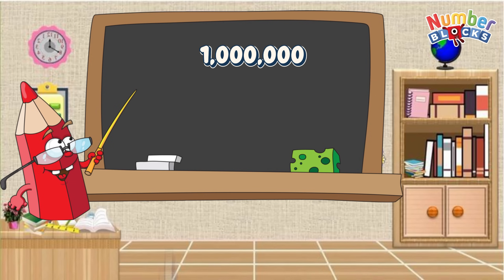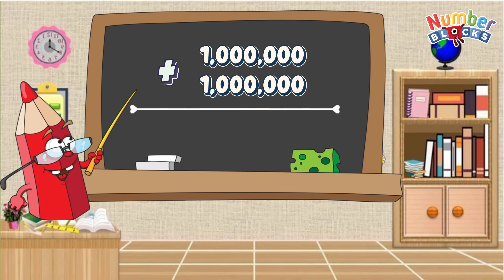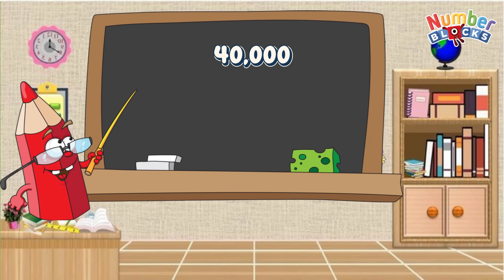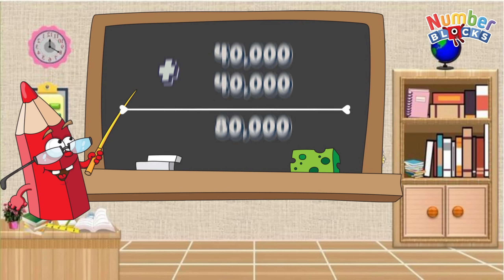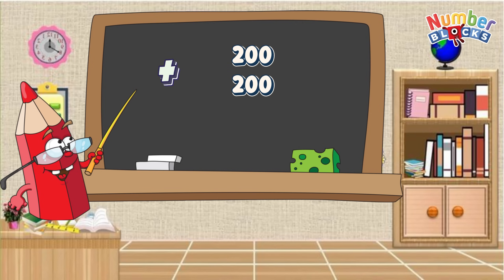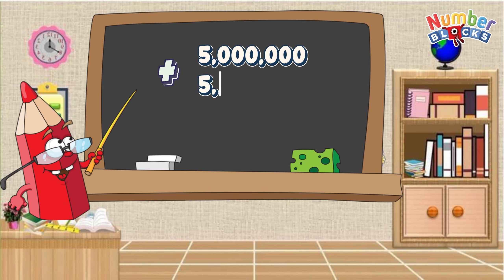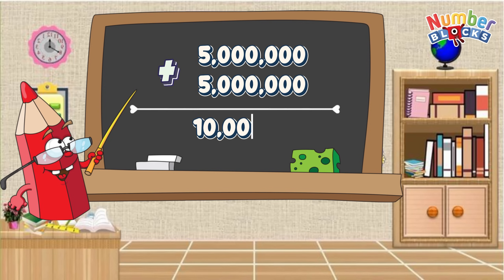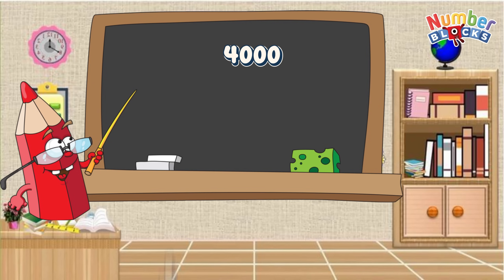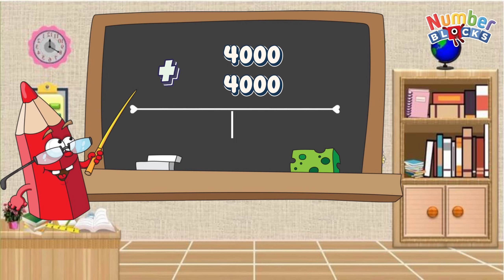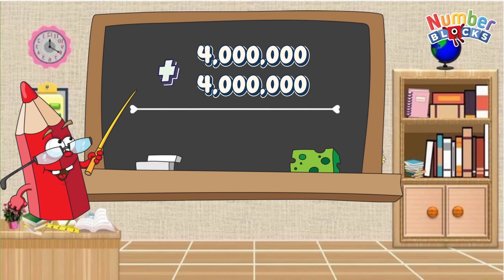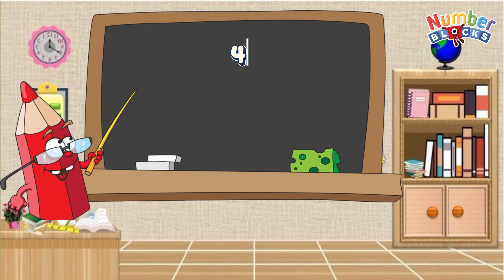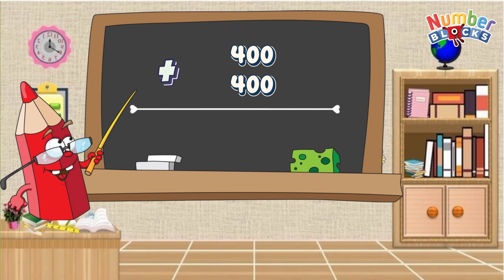One million plus one million equals two million. Forty thousand plus forty thousand equals eighty thousand. Two hundred plus two hundred equals four hundred. Five million plus five million equals ten million. Four thousand plus four thousand equals eight thousand. Four million plus four million equals eight million. Four hundred plus four hundred equals eight hundred.